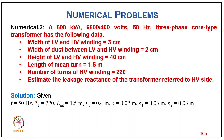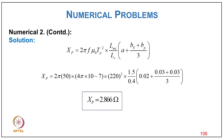Numerical problem 2: A 600 kVA, 6000/400 V, 50 Hz core-type transformer with: HV/LV winding widths 3 cm each, duct between LV and HV 2 cm, height of windings 40 cm, mean turn length 1.5 m, HV turns 220. Estimate leakage reactance referred to HV winding. From X1 = 2πf×μ₀×Tp²×LMT/Lc × [a + (bs+bp)/3], result is Xp = 0.866 Ω.